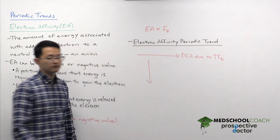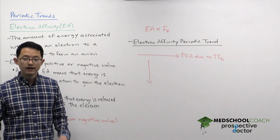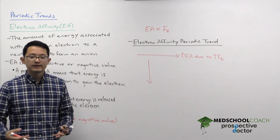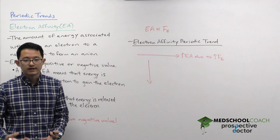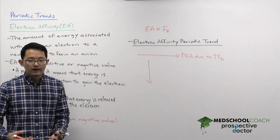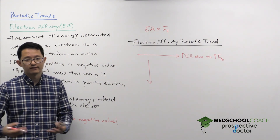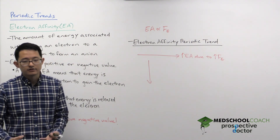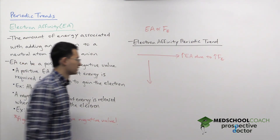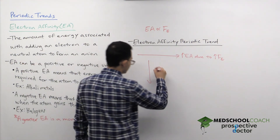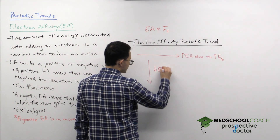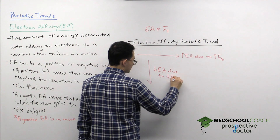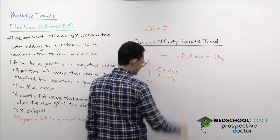As you go down a column on the periodic table, the electrostatic force decreases. Your nucleus exerts a weaker electrostatic interaction on its valence electrons. So if the valence electrons are less attracted, your nucleus in general has a lower electron affinity — we have a decrease in EA due to a decrease in the electrostatic force.